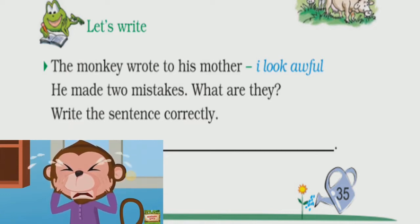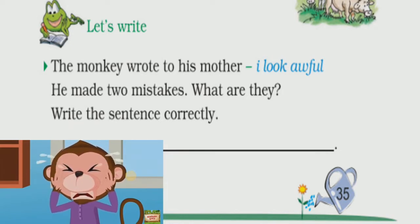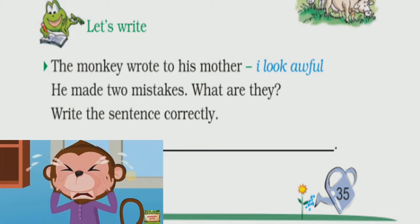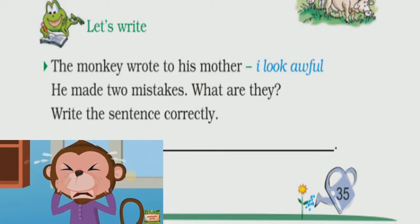The monkey wrote to his mother 'I look awful' — he made two mistakes. You need to identify those mistakes and write the corrected sentence. Remember, we corrected similar mistakes in a previous adventure. In the same way, you have to correct this statement also.